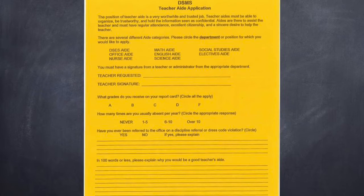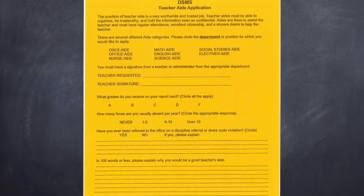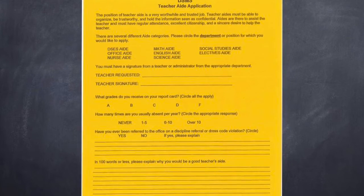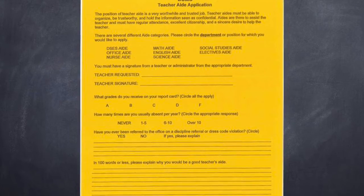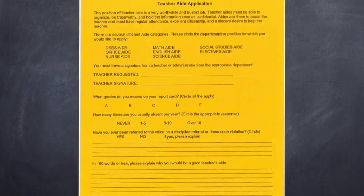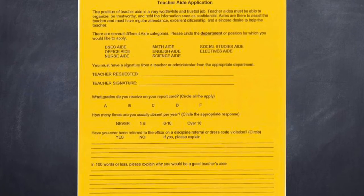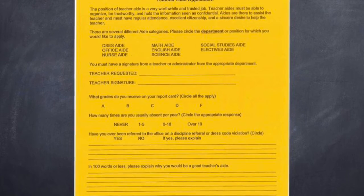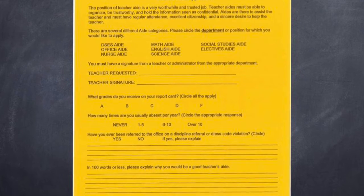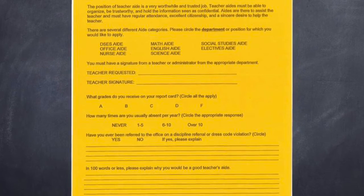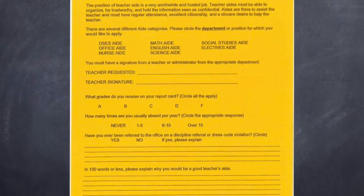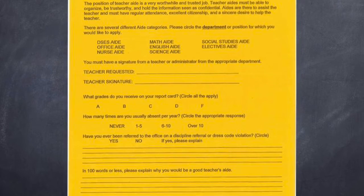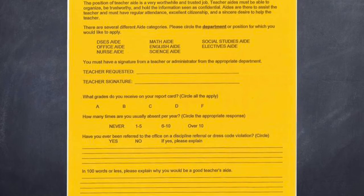Teacher aid applications may be picked up in the front office or from one of the counselors. It will need to be filled out completely. Once it's completed, you should staple it to the back of your registration card before handing it in. If you choose teacher aid, we need you to print the teacher's name and have the teacher or an administrator sign where it says teacher or administrator signature. We need you to understand you will be signing up for a department, not a particular teacher, although we will try to place you with the teacher of your choice. Think carefully about the department for which you would like to aid, then choose a teacher within that department and we will try to get you with that teacher.